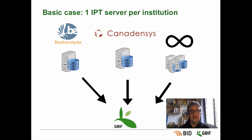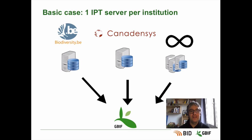Let's see different possible setups. Here we have the most simple one. We have several institutions on the screen, like the Belgian Biodiversity Platform or Canadensys, and each of these publishers will have its own IPT server and will configure it and push data through GBIF. So, one IPT instance per publisher.